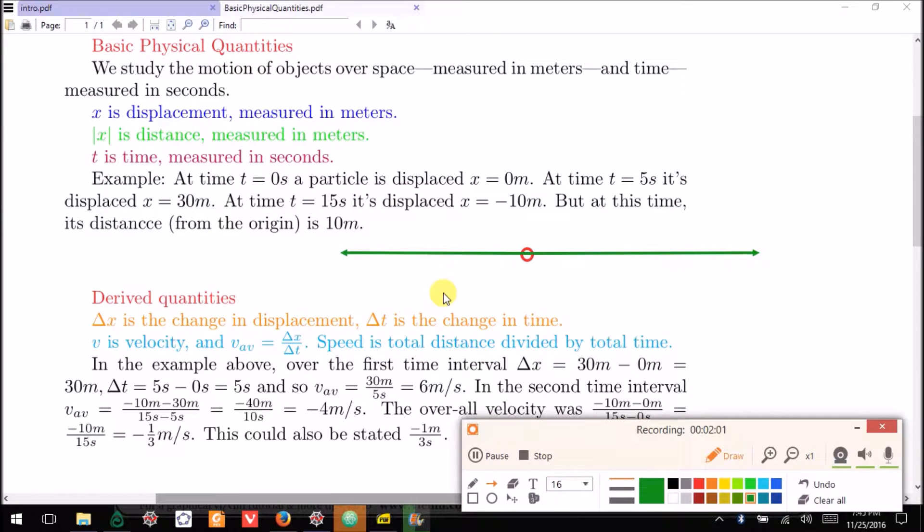We could come up with an example where a particle is at time equal to zero located at the origin, namely zero displacement. When time is equal to five seconds, it is located 30 meters away to my right in the positive displacement direction. And then when time is equal to 15 seconds, that is to say 10 seconds after this moment, it's displaced 10 meters to my left or at the negative 10 meter mark.